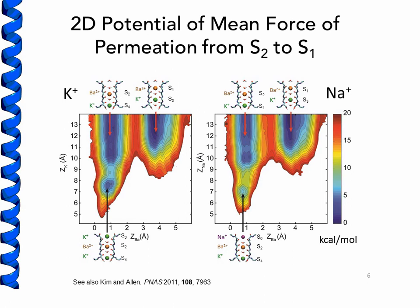To look at this possibility, we calculated the two-dimensional PMF for barium moving from S2 to S1 when there's either potassium or sodium external to it. In these plots, the x-axis corresponds to the position of the barium ion, the y-axis corresponds to the position of the lock-in ion, and the color gives the free energy of that particular arrangement of ions. Surprisingly, we see that the PMF is selective for potassium when it's locking barium into S2 — this is the region in the lower left — and this is at least reasonably consistent with what has been observed experimentally.